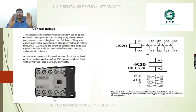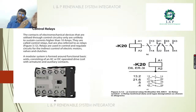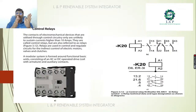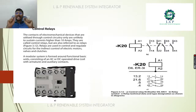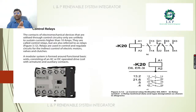Control relays are electromagnetic relays utilized through control circuitry, unlikely to sustain current higher than 10 amps. They are also referred to as relays used in controlling and regulating the circuits of electrical motors, valves, and clutches. An example of a control relay with its real-time photo and symbol has been provided.